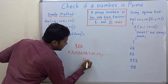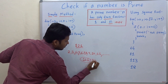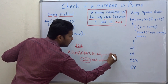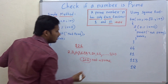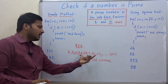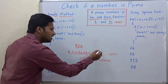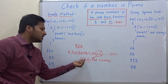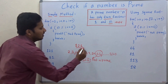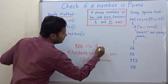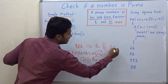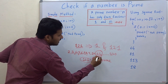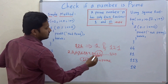So 121 is not a prime number because from 2 to 120 there is a number which divides 121. There is a factor of 121 other than 1 and 121 itself, and that factor is 11.